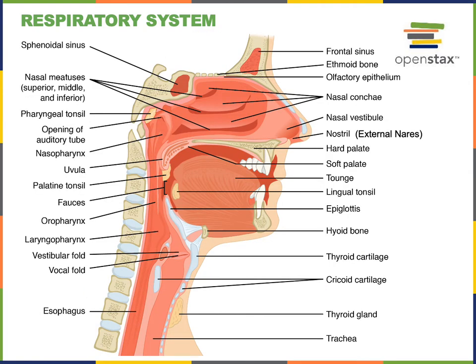Air enters the nasal cavity through the external nares, also known as the nostrils, into the anterior region known as the nasal vestibule. Then air flows through the nasal meatuses, which are tube-shaped passageways just inferior to the nasal conchae. The pattern of airflow through the meatuses is turbulent, which helps to increase the humidity and warm the air as it enters the nasal cavity. The superior surface of the nasal cavity is the olfactory epithelium, which contains the olfactory receptors to detect odorants for the sense of smell.